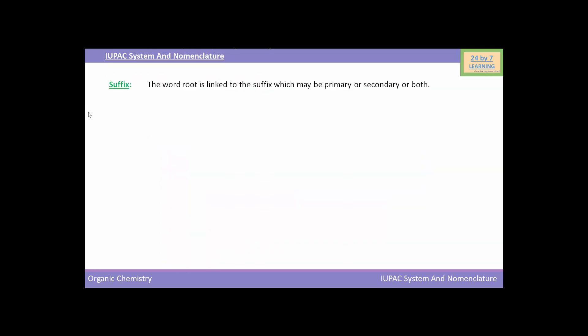Now we will see the suffix. The word root is linked to the suffix, which may be primary, secondary, or both. First of all, we will see the primary suffix. It indicates the nature of linkage between the carbon atoms.